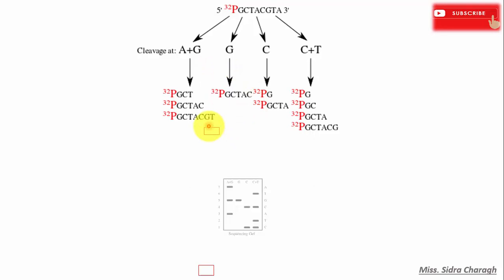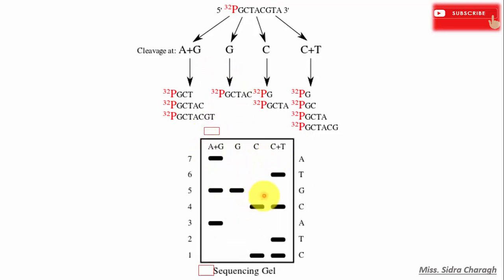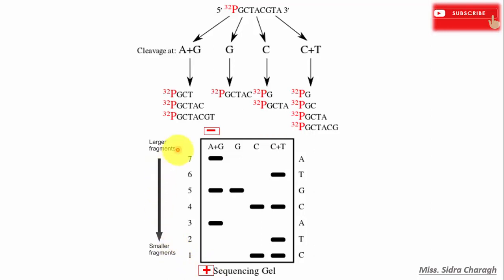Next, we take all four different reaction mixtures and run them on polyacrylamide gel electrophoresis, which is then autoradiographed to read the DNA sequences. Since DNA is negatively charged, it travels on the gel from the negative electrode to the positive electrode. The smallest fragments travel faster compared to larger fragments due to their size, and we read the fragments from bottom to top.